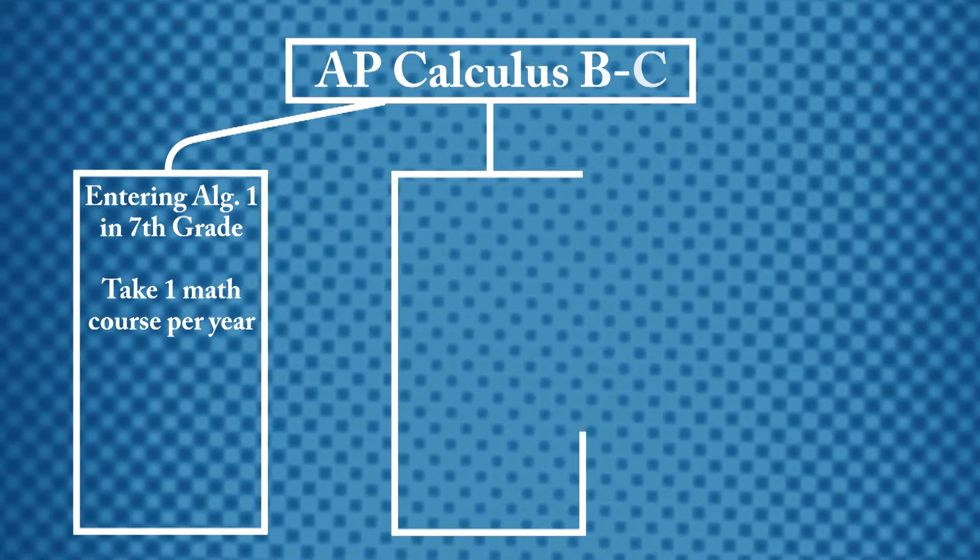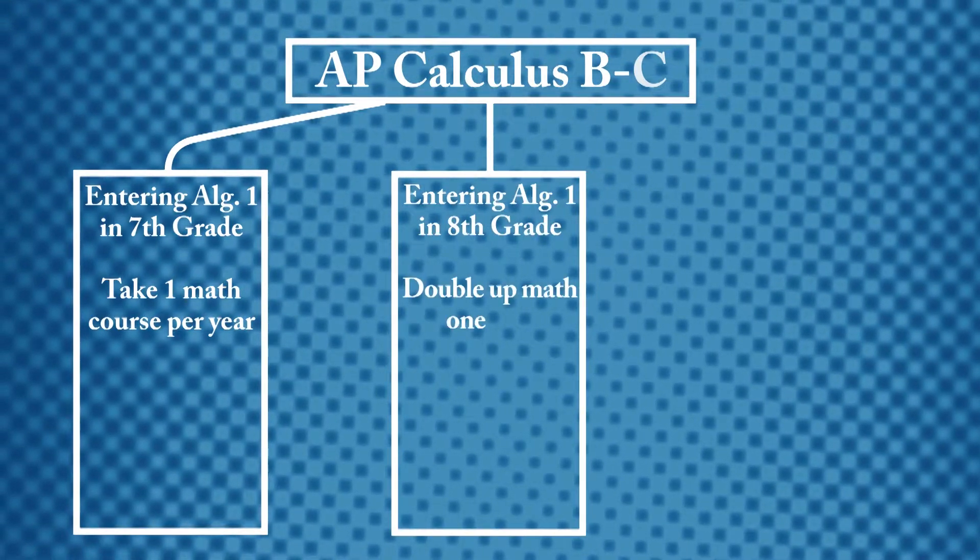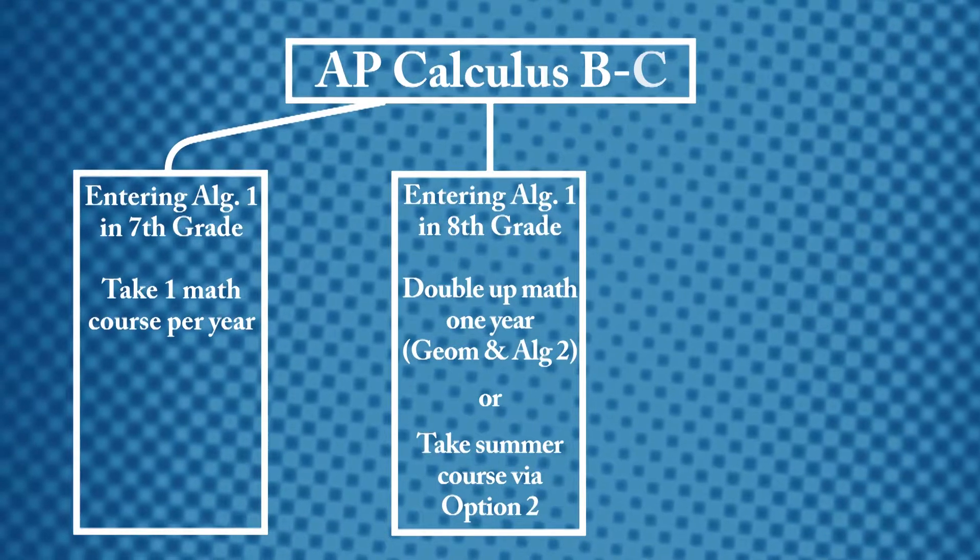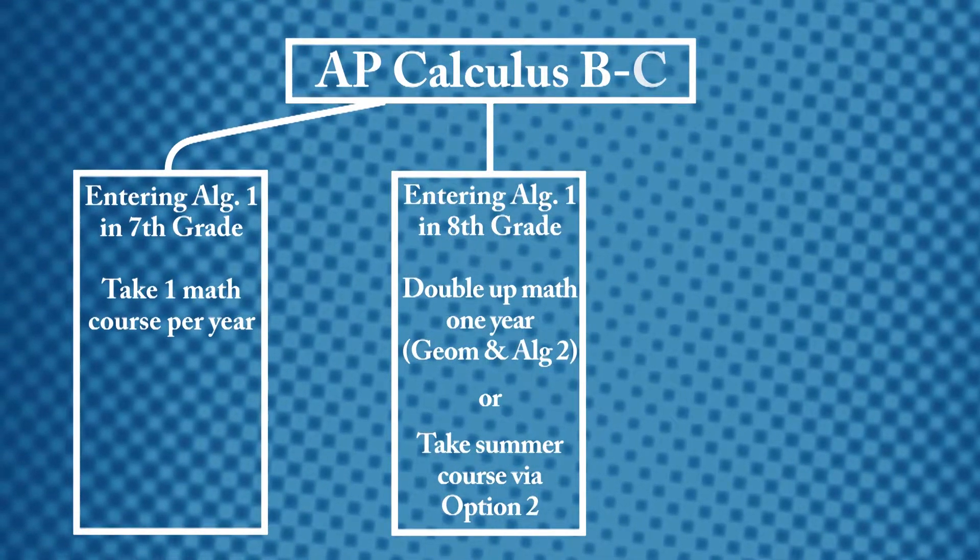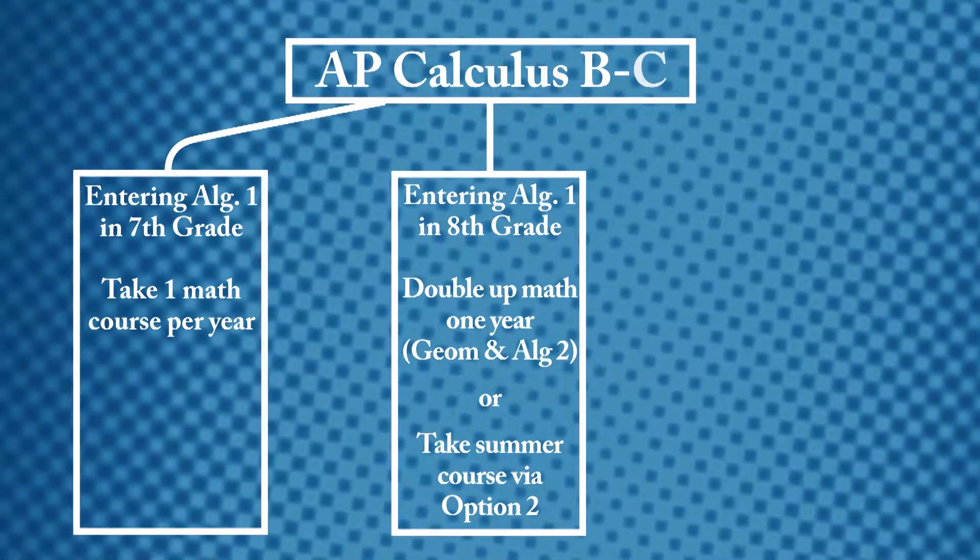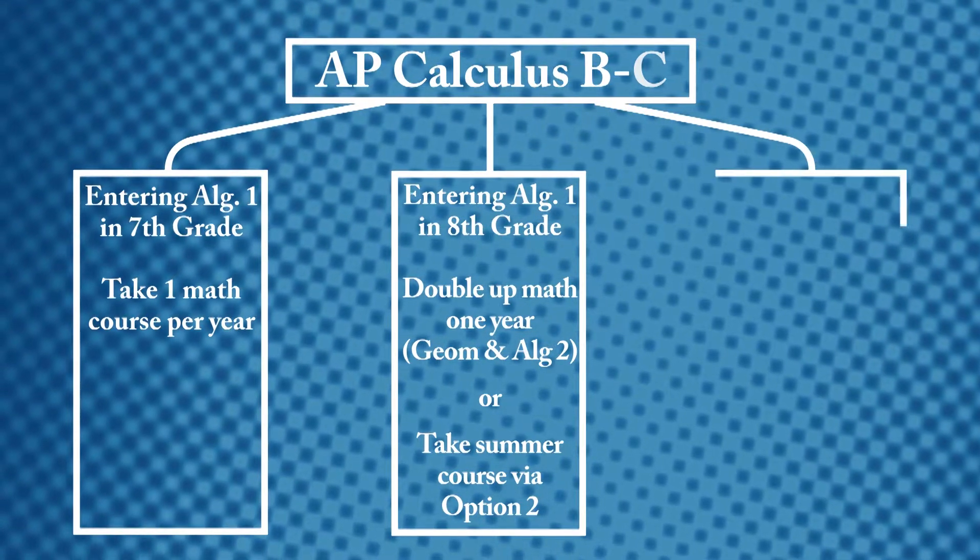Grade 8 Algebra students can also advance to AP Calculus BC by doubling up one year with Algebra 2 and Geometry or by taking a summer course such as Pre-Calculus or Calculus via the Option 2 that was discussed earlier.